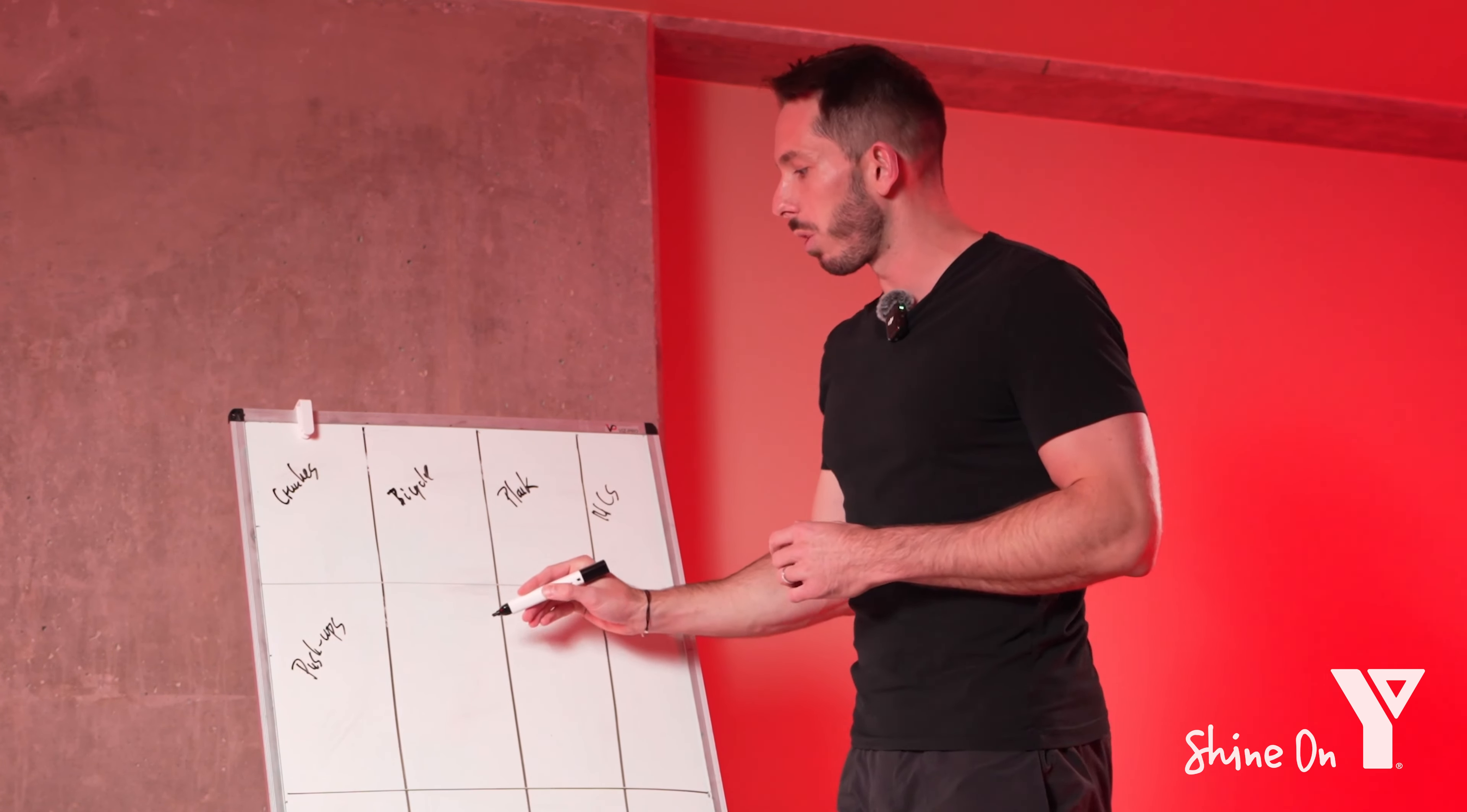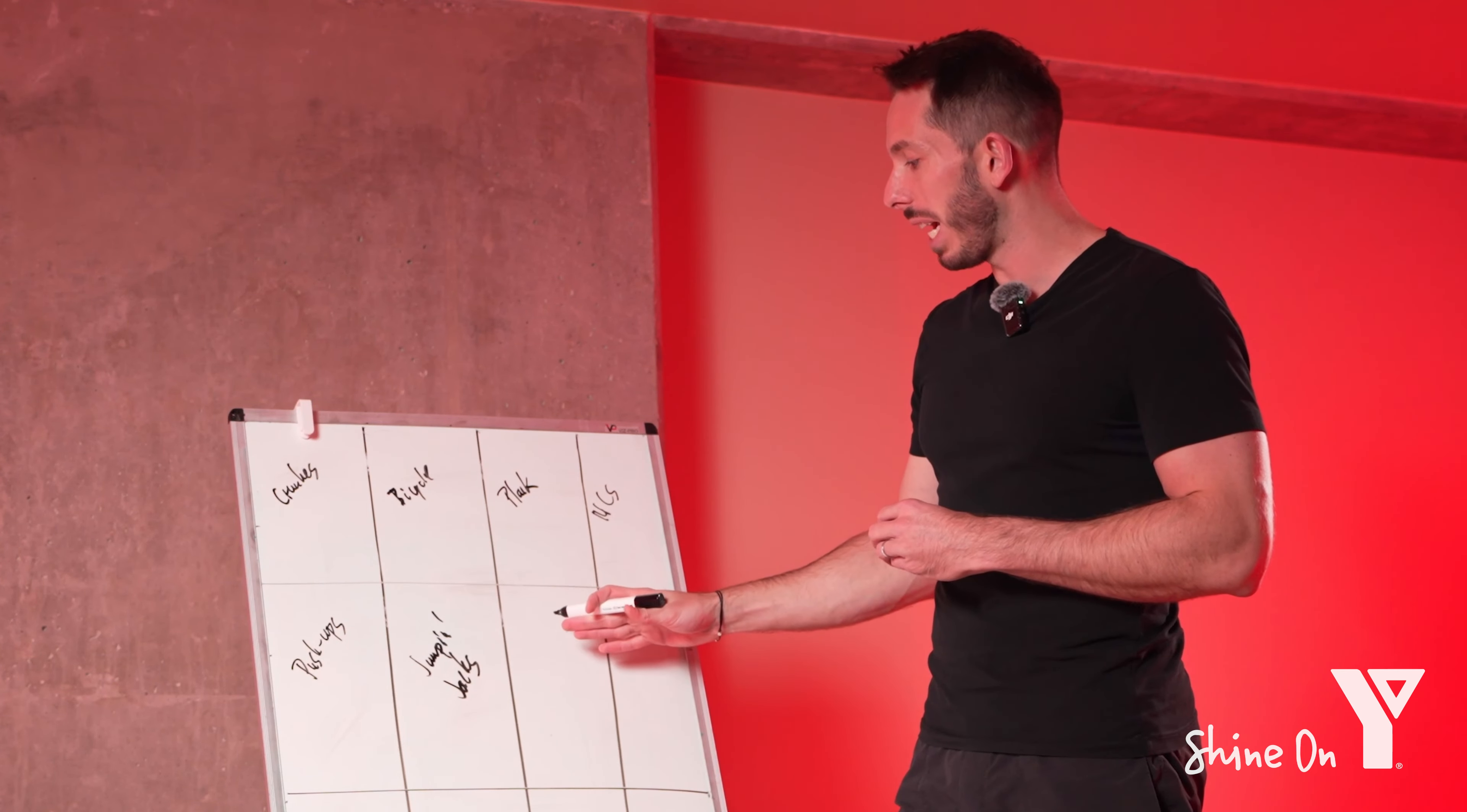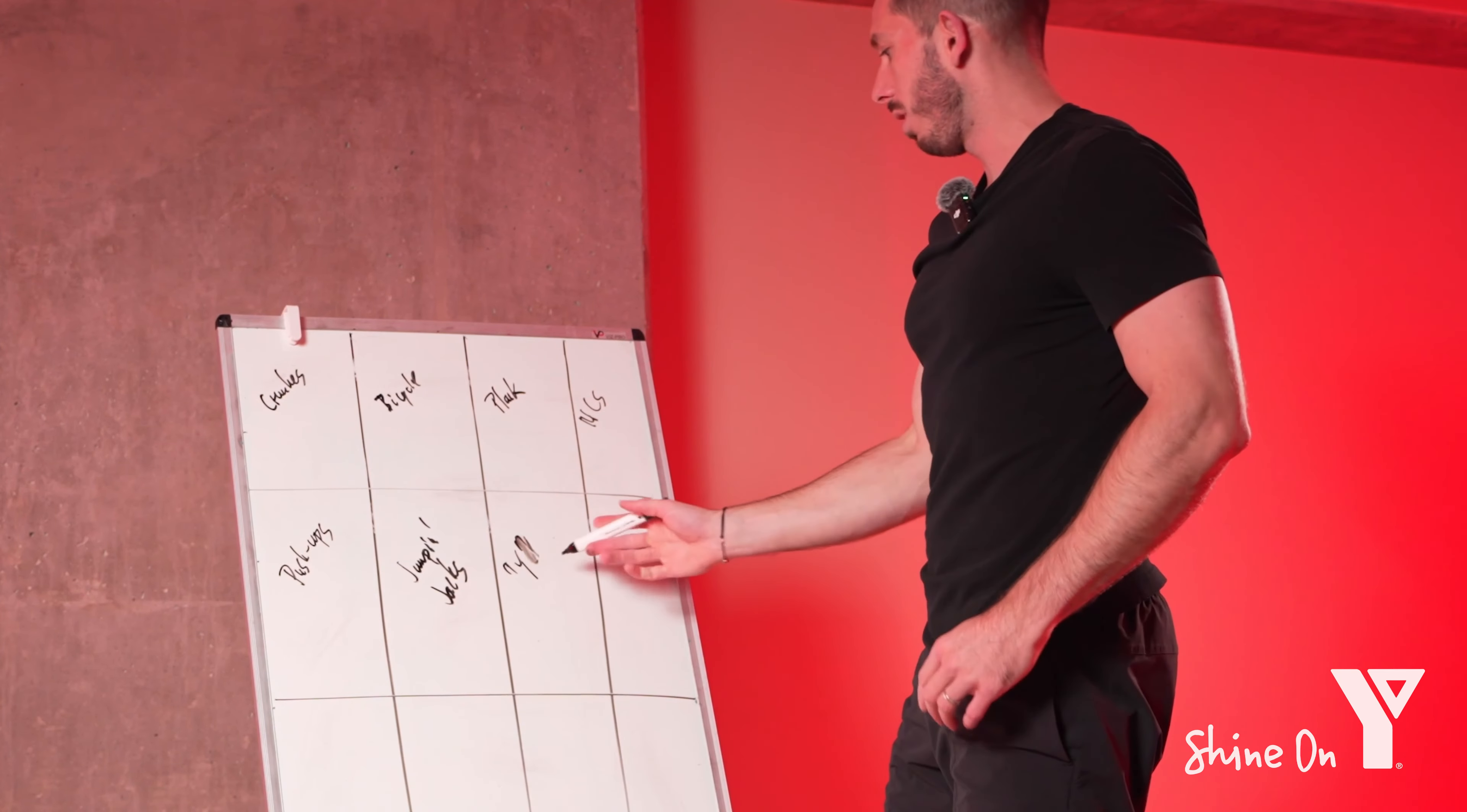Then again we need something more of a high intensity. So let's do jumping jacks again to get the heart rate up. For the third one, because we did the push-ups for the chest here, we can do something for the back. Let's do the wise. I will show you later what it is. But you're basically keeping your shoulder blades together, arms straight. It doesn't look like much, but it hurts more than most of the other exercises.